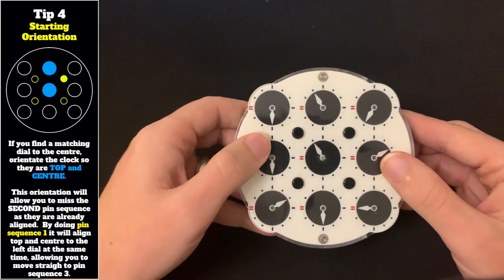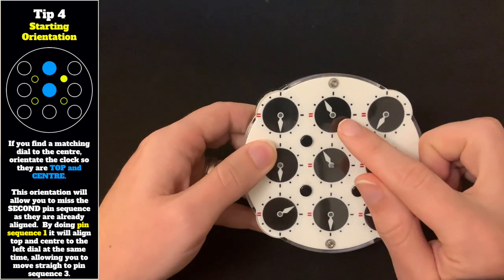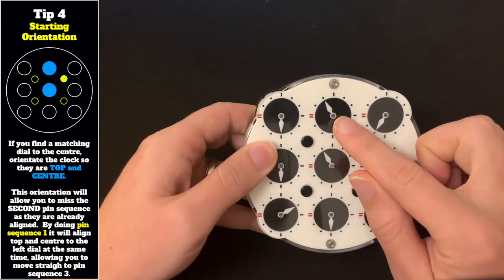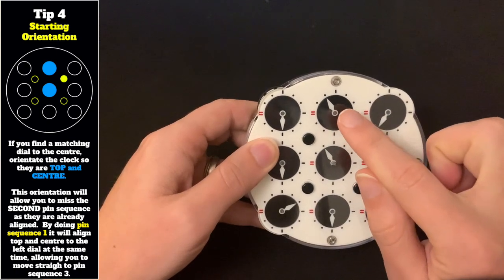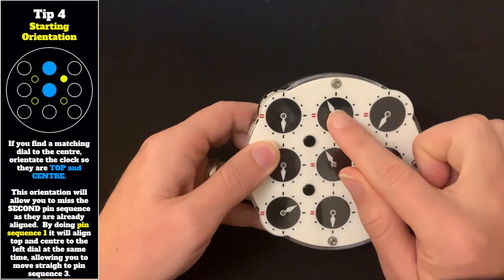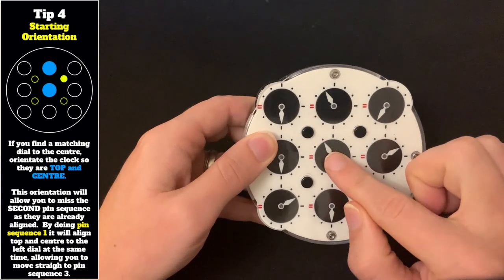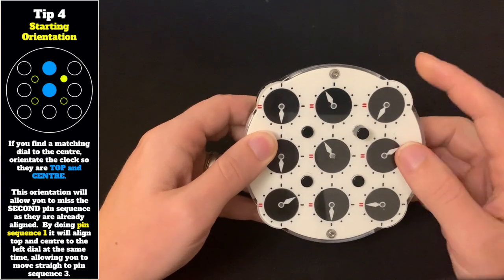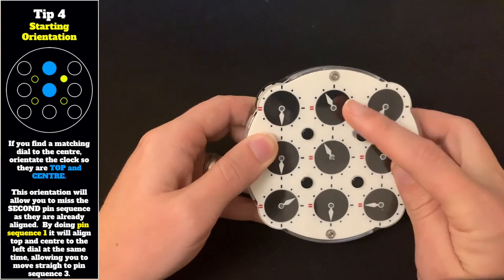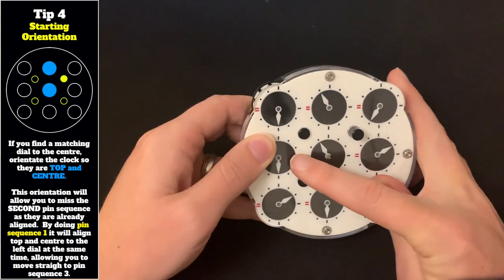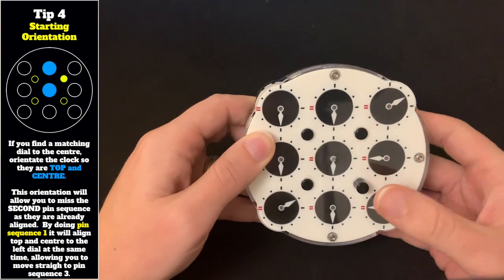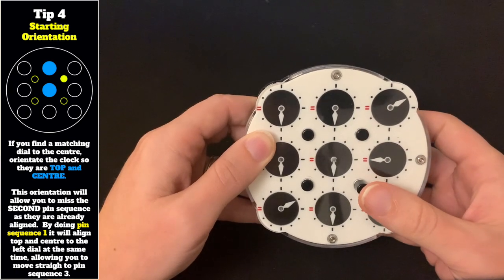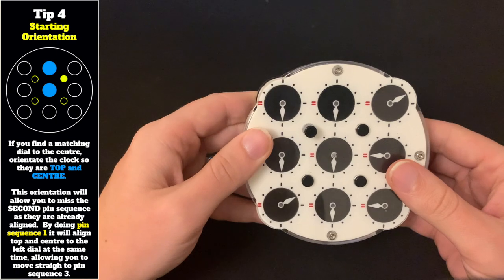So the starting position, if you have the centre matching one of the outside parts of the cross, you would start with the top and the centre like this. So your first move would align both of these to this one at the same time, which would mean you would miss this skip pin completely and go straight on to the third sequence.